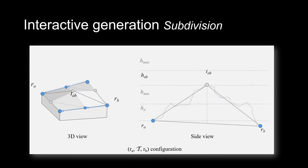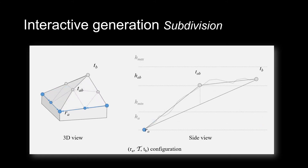The case where two river vertices are separated by a terrain edge implies the creation of a crest between them. In this case, the new vertex elevation will be higher than the two input vertices. In this configuration, there is only one river vertex; thus, we generate a terrain vertex between the two input vertices.